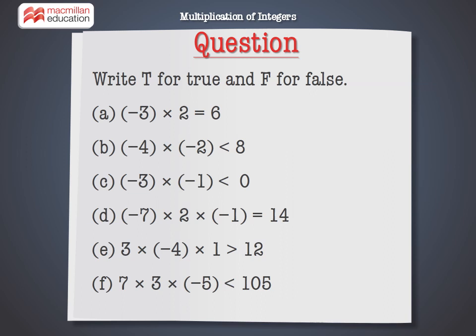Write T for True and F for False. A: Minus 3 into 2 is equal to 6. B: Minus 4 into minus 2 is less than 8. C: Minus 3 into minus 1 is less than 0. D: Minus 7 into 2 into minus 1 is equal to 14. E: 3 into minus 4 into 1 is greater than 12.